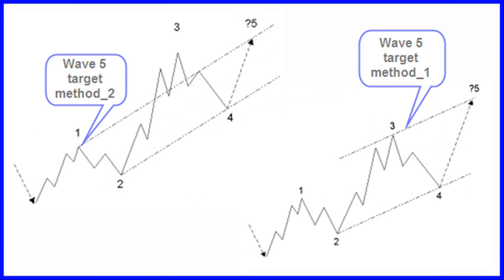Quite often, you will see a wave 5 that is equal to wave 1, or 61.8% to 76.4% of wave 3. If there is a wave 5 extension, then wave 5 is commonly 161% of wave 3 or the sum of waves 1 and 3.